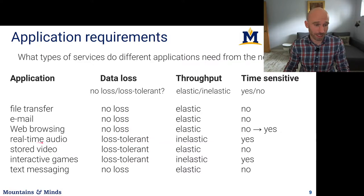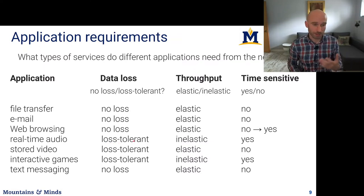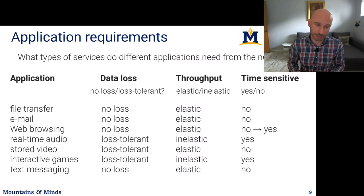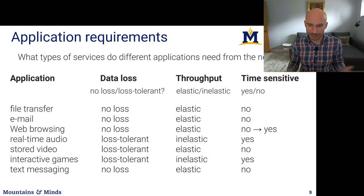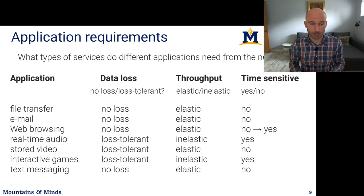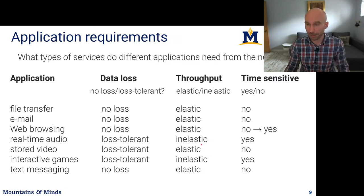Real-time audio — like a telephone conversation — is in fact loss-tolerant: if you don't receive some voice packets, humans can still reconstruct the sound, though with reduced quality. But the throughput is quite inelastic. Voice is encoded at, say, 56 or 92 bits per second — that's it, it's constant. If you can deliver that throughput your application works; if not, you'll have gaps in audio. It is also time-sensitive: there are studies showing that about 200 milliseconds is the absolute deadline after which people start colliding — beginning to speak at the same time because they don't realize whether someone else has finished.